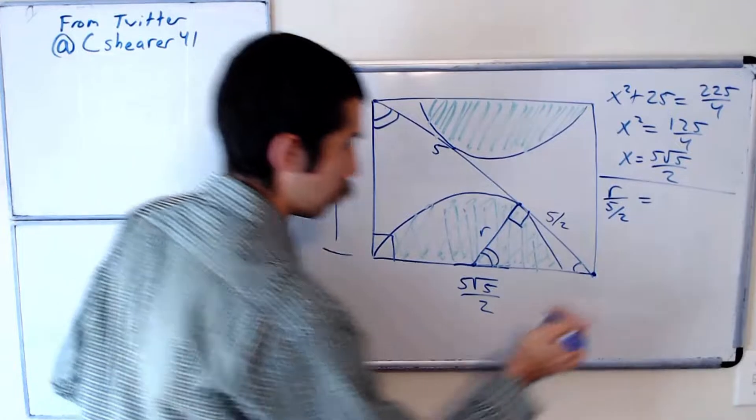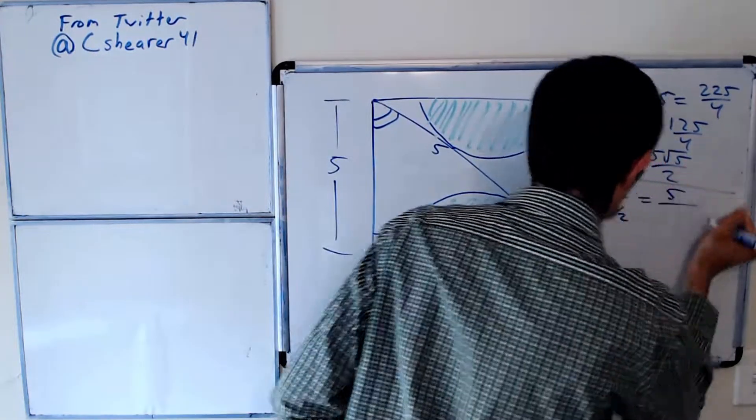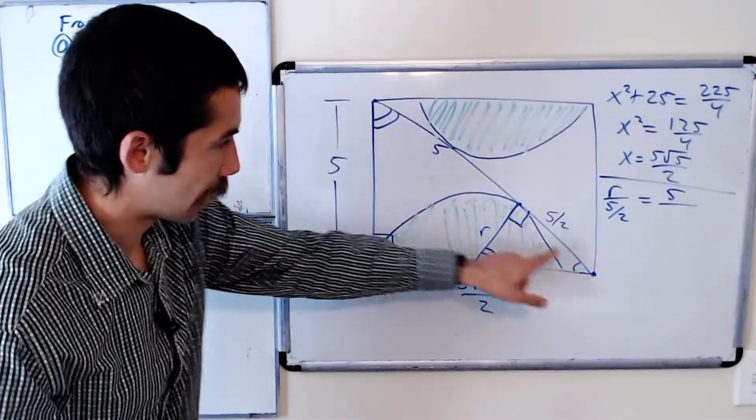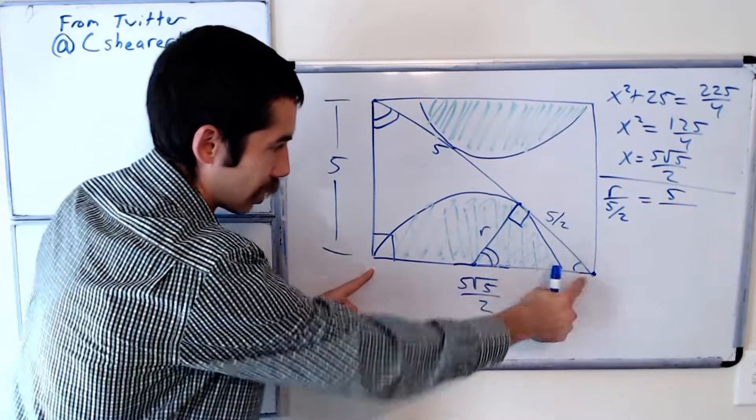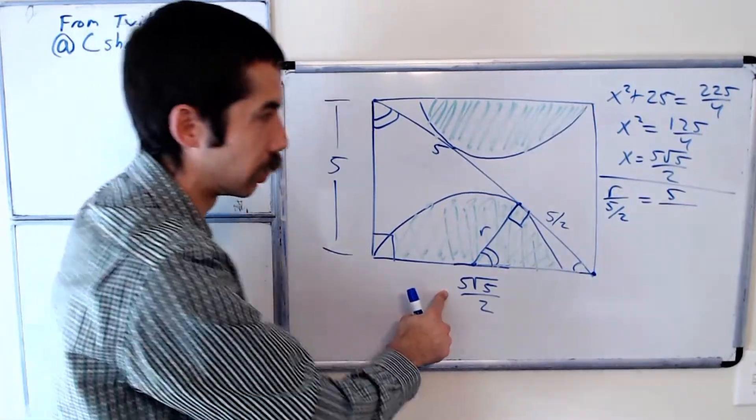5 to right angle to single arc, right angle to single arc, 5 square root of 5 over 2.